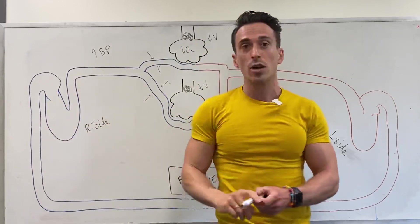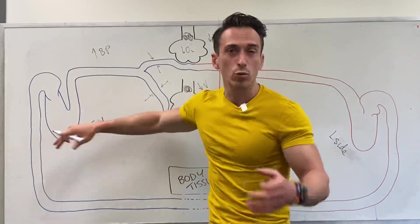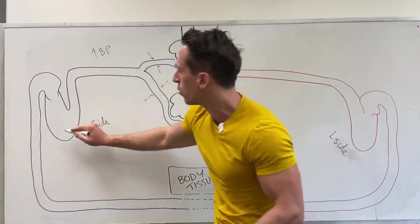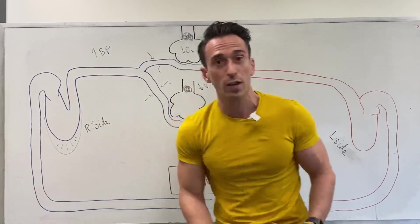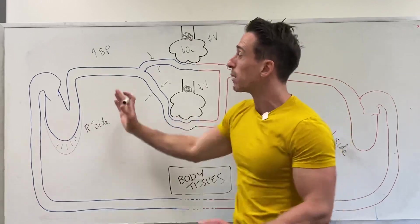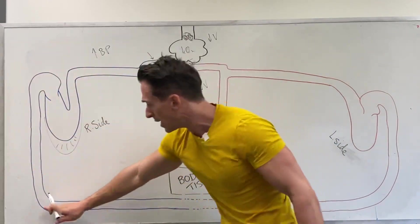It backs up into the right hand side of the heart where, because it's a muscle, it tries to overcome this resistive force. It gets thicker and you get right-sided cardiac hypertrophy, but it ultimately fails and the blood continues to back up into the venous system.